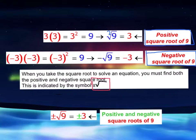And I notated the correct answer in the bottom of the screen. Plus or minus the square root of 9 would give you plus or minus 3, the positive and negative square roots of 9.